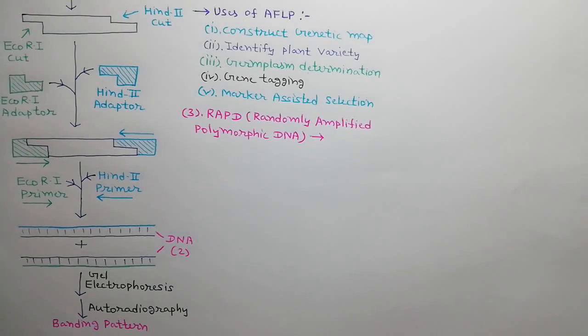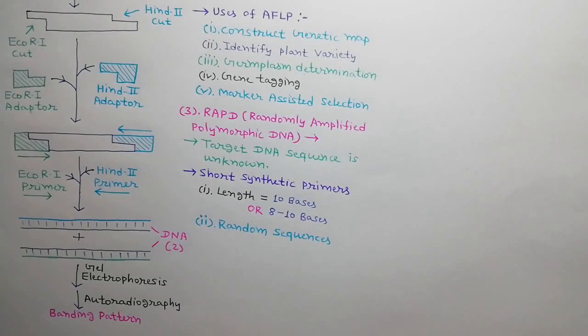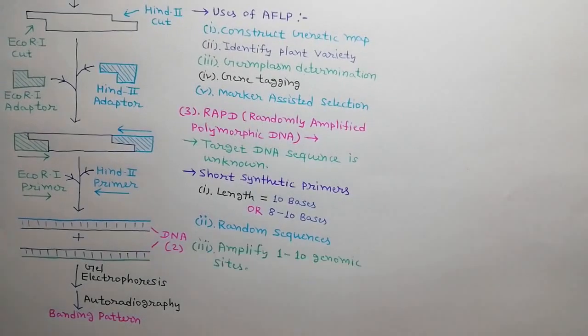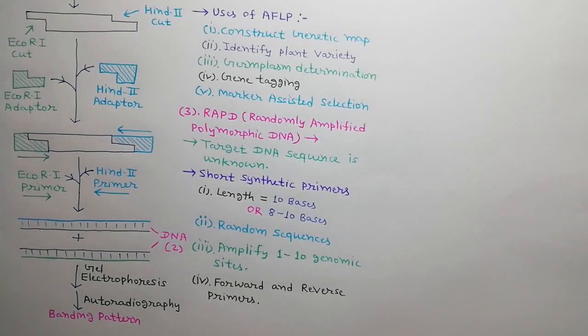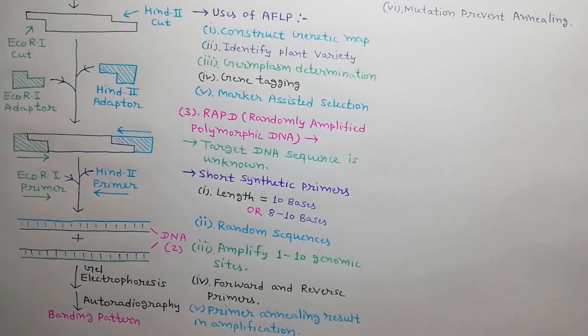Next DNA marker is RAPD means randomly amplified polymorphic DNA. Here, the sequence of target DNA is unknown. Short synthetic primers are used which has following properties. Length is 10 bases or 8 to 10 bases. Many primers of random sequences are used in this technique. Normally, they can amplify 1 to 10 genomic sites at a time. They can work as forward as well as reverse primers. If primers anneal, it results into amplification and if not anneal, no amplification occurs. If complementary sites get mutated, no annealing takes place. As a result, no amplification occurs.